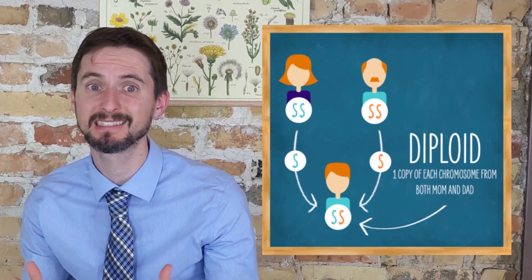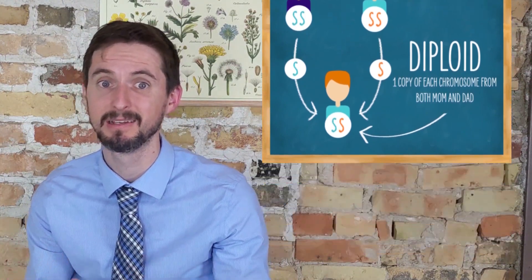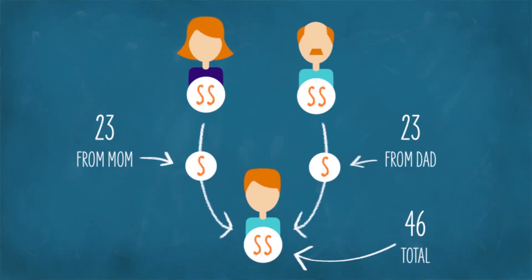We actually discussed this in some detail in our video on meiosis — now might be a good time to watch that if you are feeling at all confused. You have 23 different types of chromosomes, but you received one of each of those 23 types from each of your parents, giving you a total of 46 chromosomes.